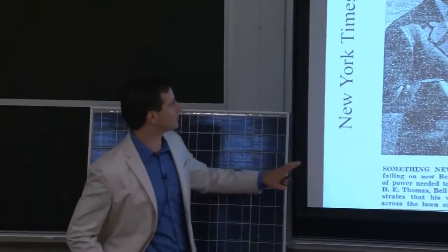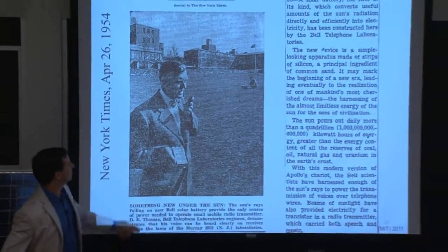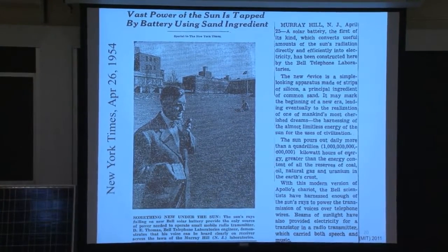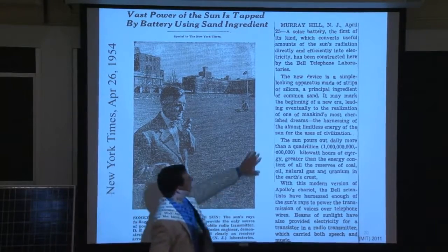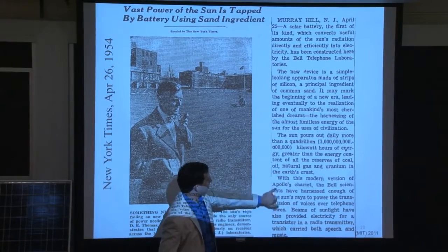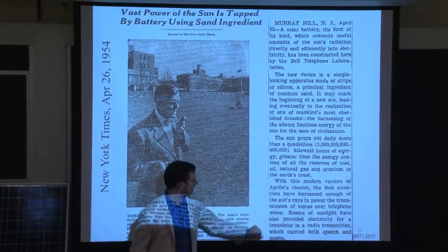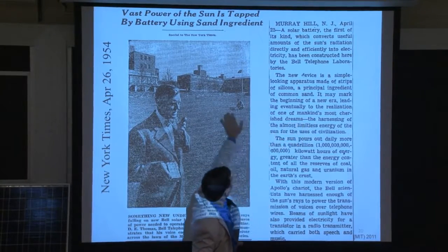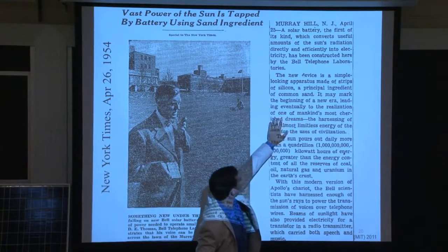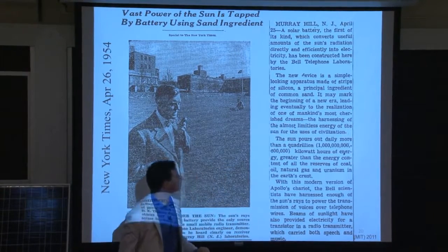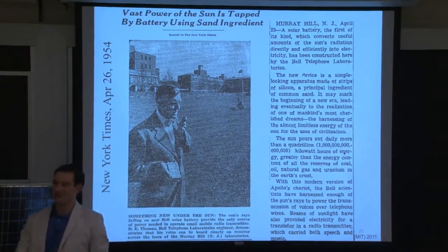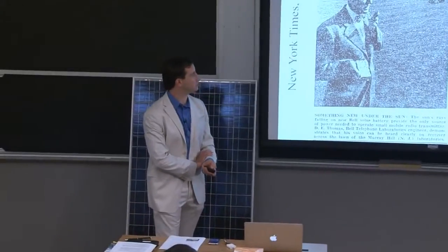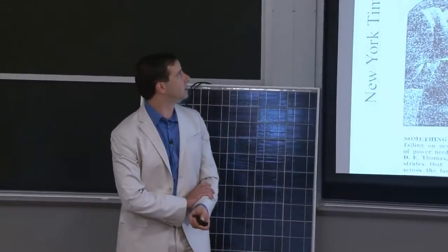Within a decade, folks were more interested in sending satellites into space than powering terrestrial objects. But at Bell Labs in New Jersey they had a small radio communicating with a little device powered by the solar cell. The New York Times article from that time noted: 'With this modern version of Apollo's chariot, the Bell scientists have harnessed enough of the sun's rays to power the transmission of voices over telephone wires,' speculating about eventually realizing 'one of mankind's most cherished dreams — the harnessing of the almost limitless energy of the sun for the uses of civilization.' They saw the opportunity there. But a lot of development had to come under the bridge before solar could be made really cost effective, from 1954 to almost 60 years later.